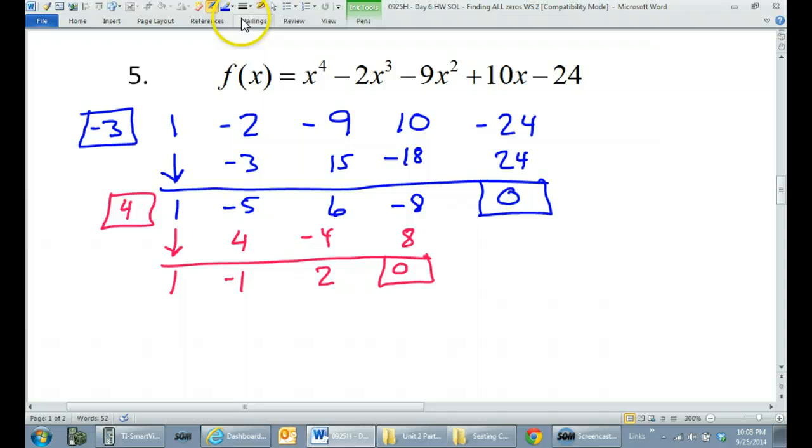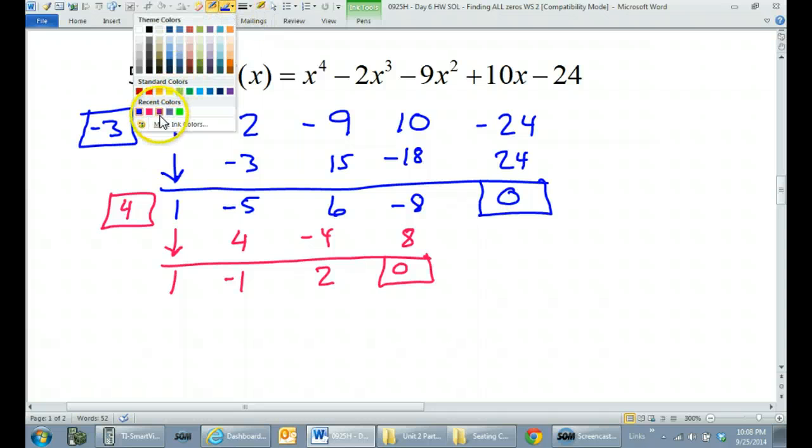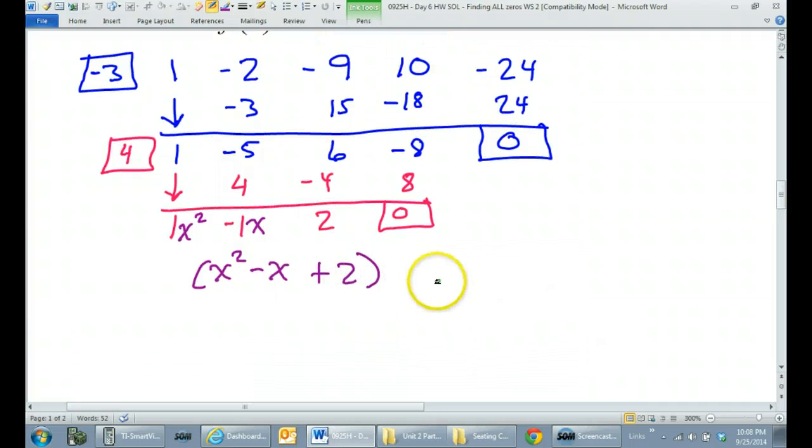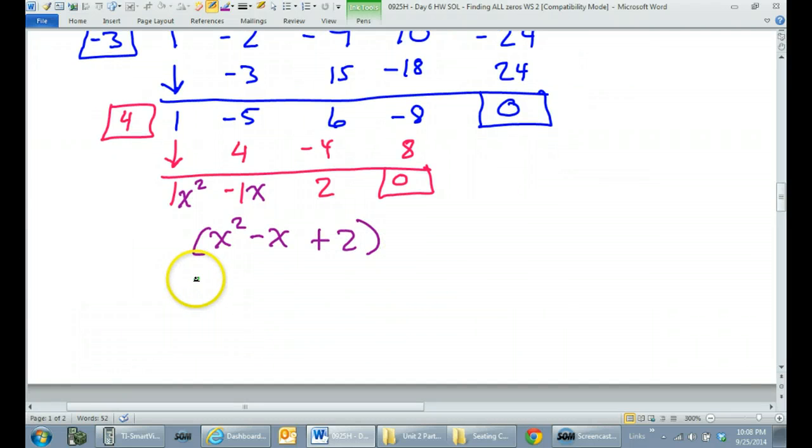You may all do this first. So if I put the variables back in. This is a constant, this will be the x term, and this will be my x squared term. Then what I have here is x squared minus x plus 2. Now let's see if this will factor.